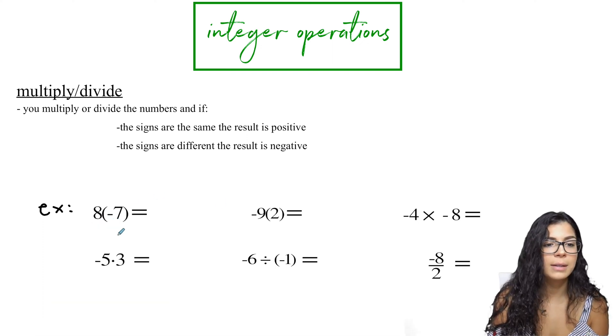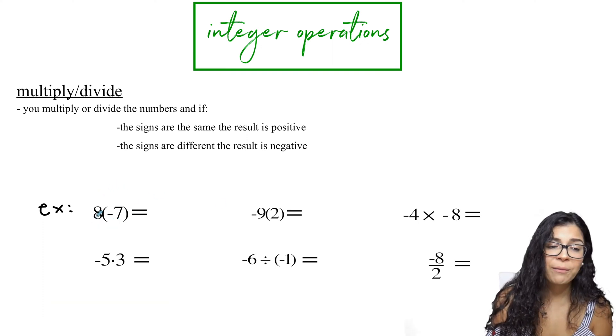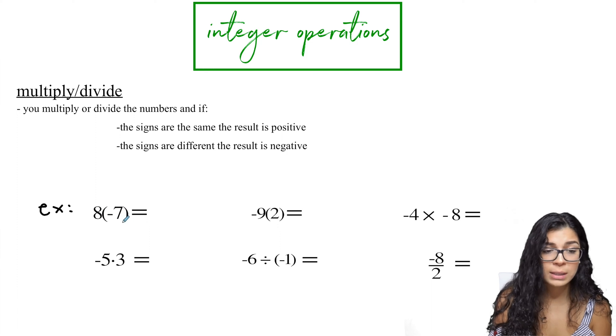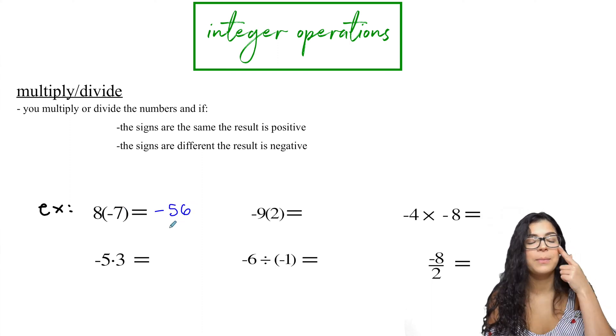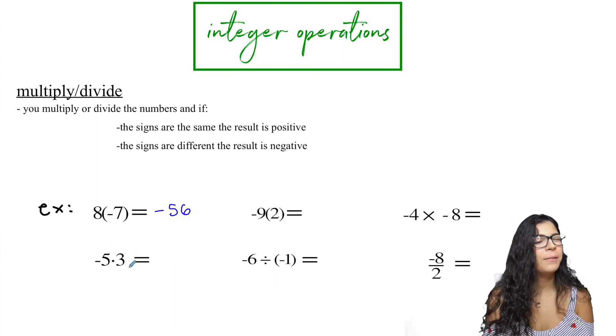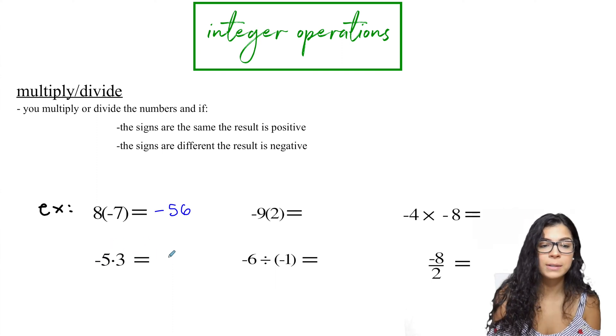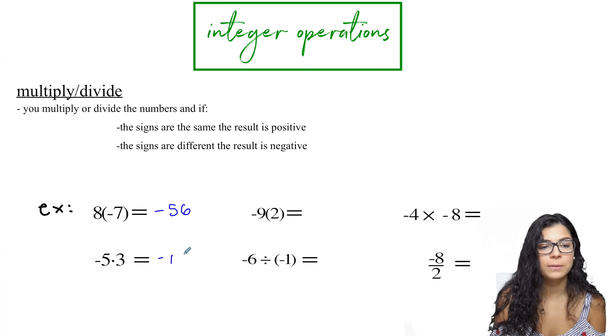So let's take a look at the first example. We have positive and a negative. So they're different signs. So my result will be negative and eight times seven, 56. Hopefully you know your multiplication table. Alright. Negative five, positive three. So different signs. My result will be negative and five times three is 15.